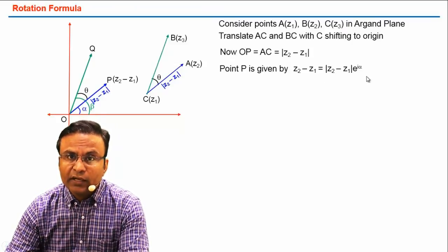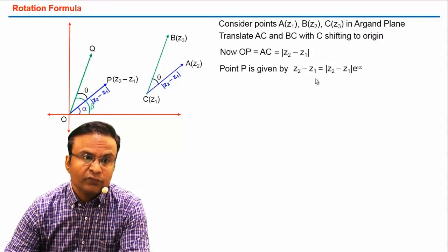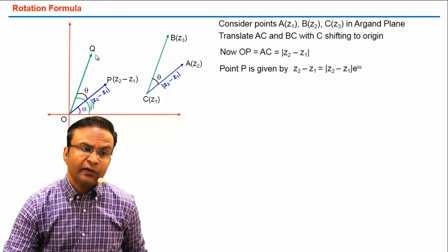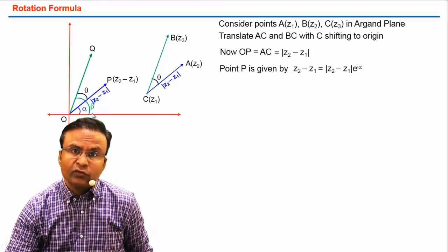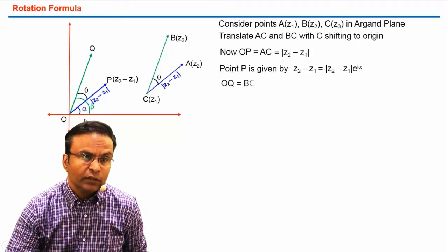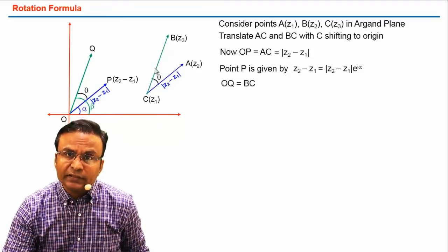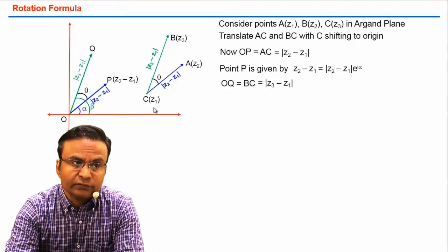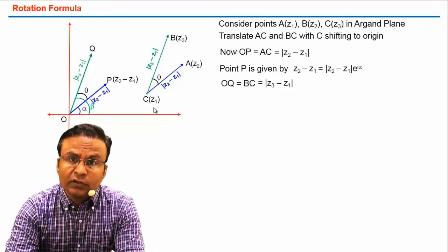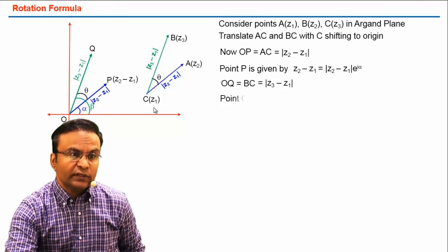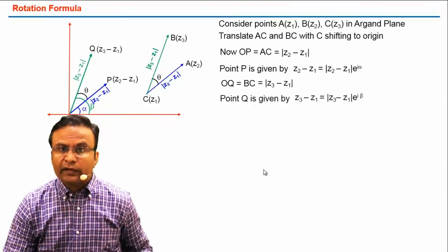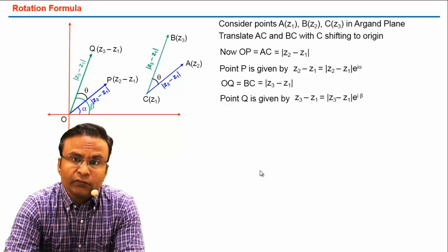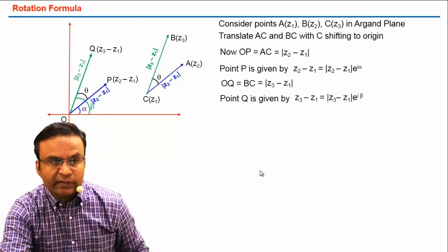Point P is given by (z2 − z1), and in Euler form that is |z2 − z1| · e^(iα), where alpha is the argument of this complex number — this is clear from the diagram. Similarly, to find the complex number of point Q, we have argument beta. Length OQ is equal to BC, which is the distance between z3 and z1, i.e., |z3 − z1|. So the complex number associated with point Q is (z3 − z1) = |z3 − z1| · e^(iβ), where beta is the argument — clear from the diagram.